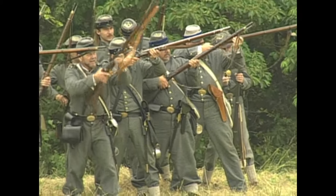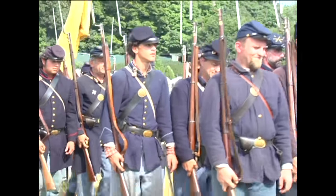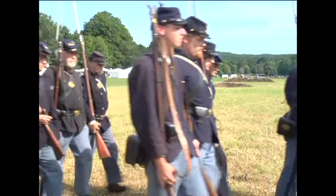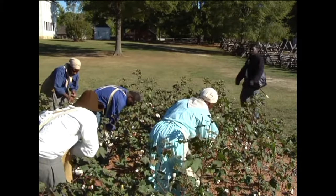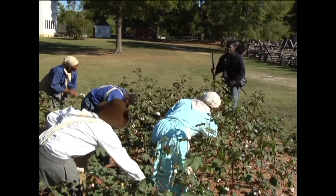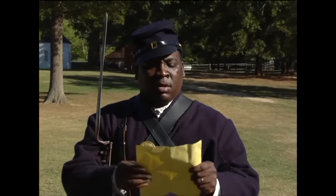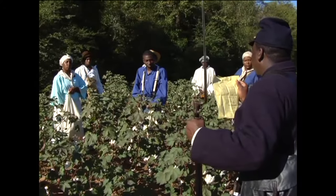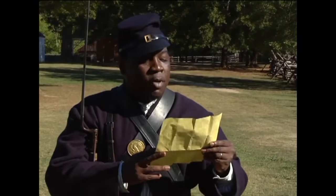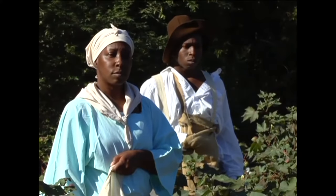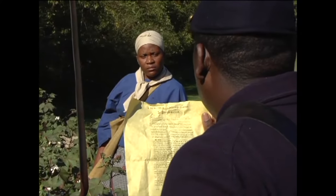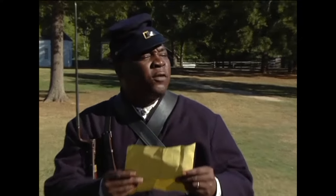A Civil War is a war between two groups of people of the same country. The war began in 1861 and raged on for years. In September 1862, President Lincoln issued the Emancipation Proclamation. Emancipation means to free someone, and it set all the enslaved people in the Confederacy free. Word of the Proclamation spread throughout the country. The Proclamation declared: 'That on the first day of January, in the year of our Lord 1863, all persons held as slaves shall be, thenceforward and forever free.'